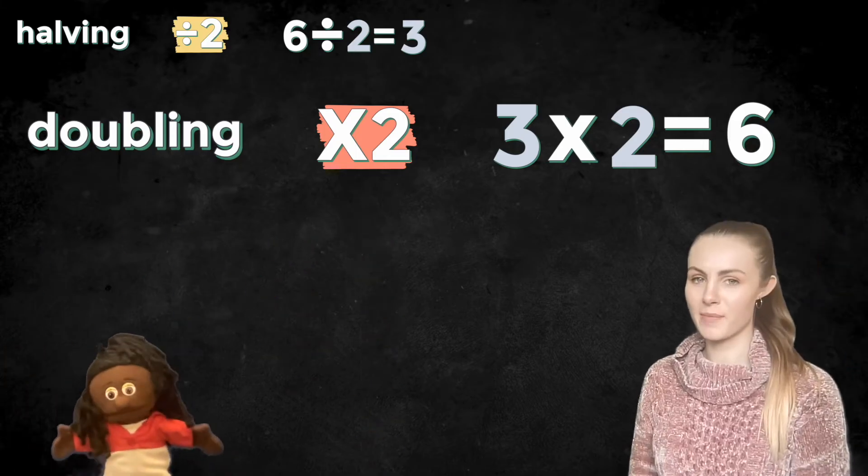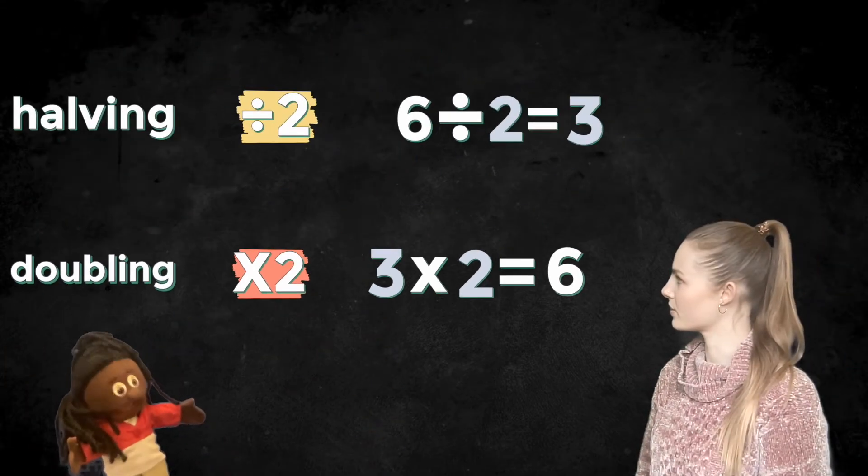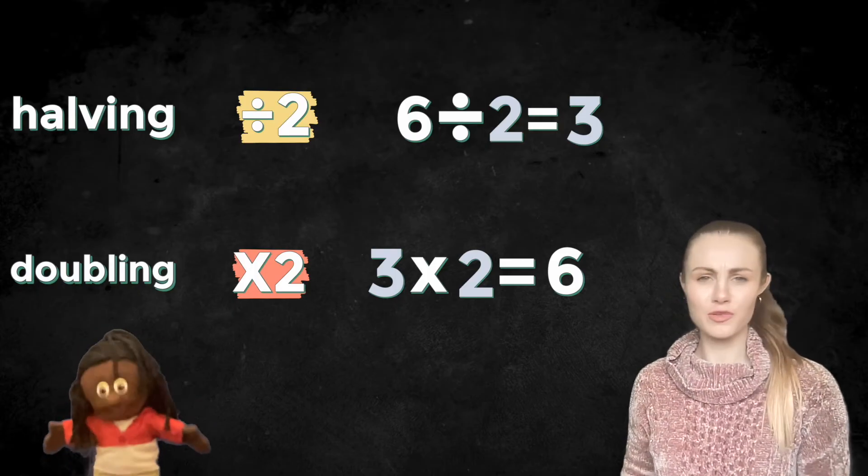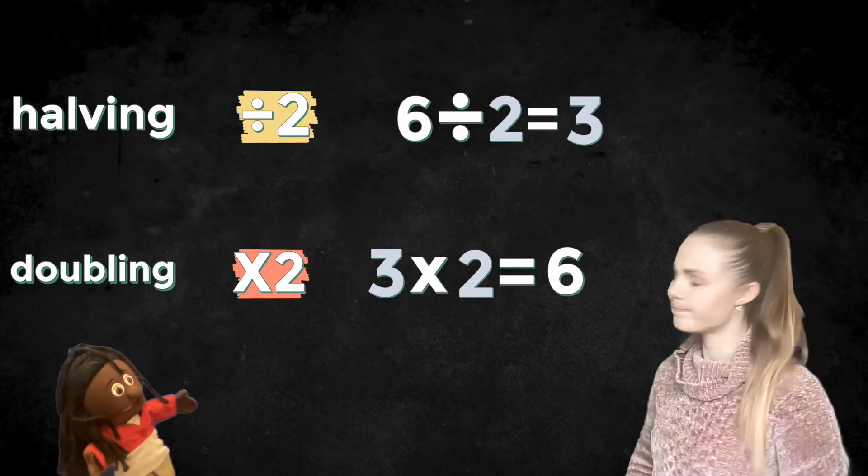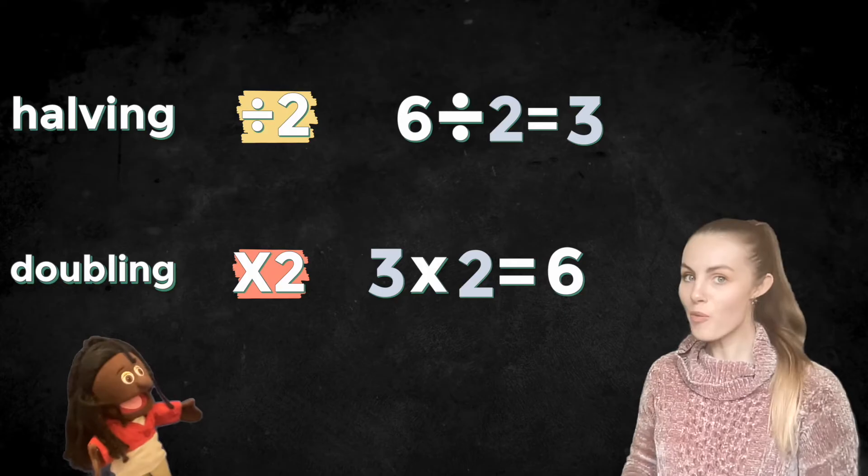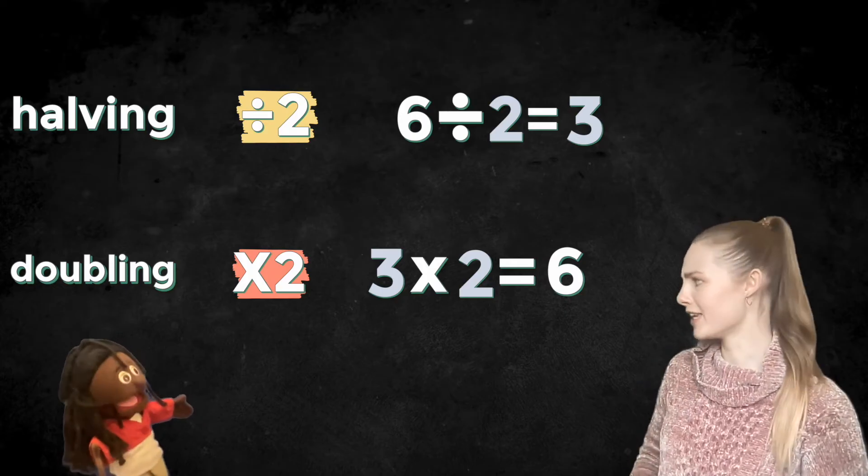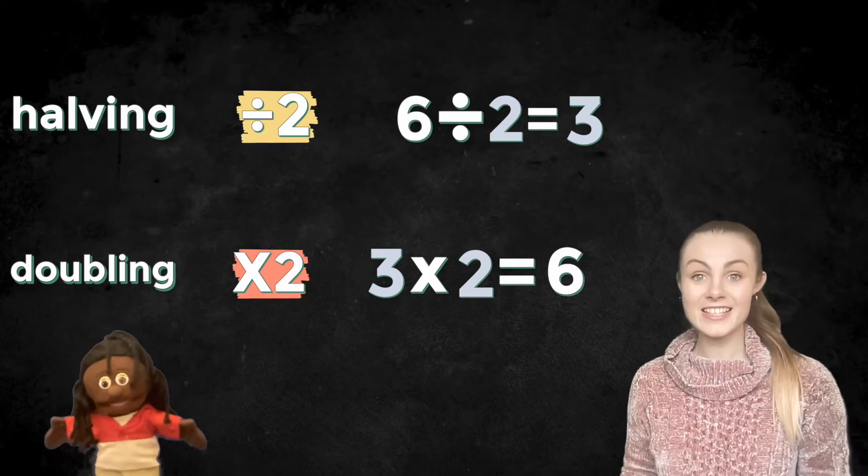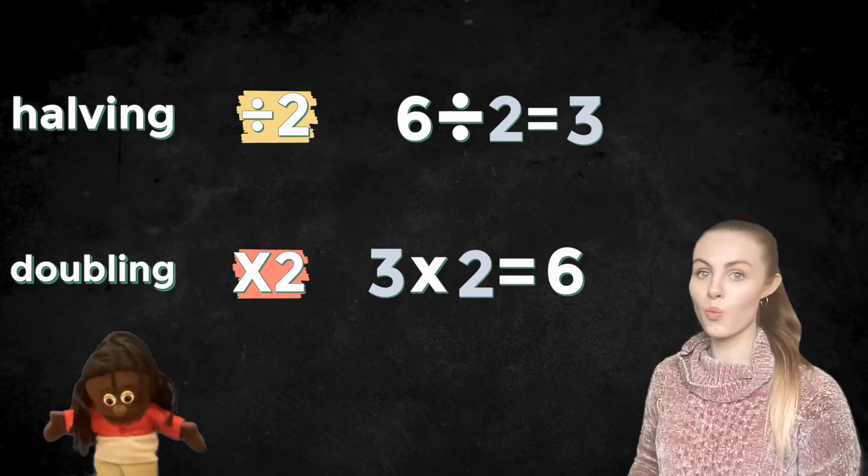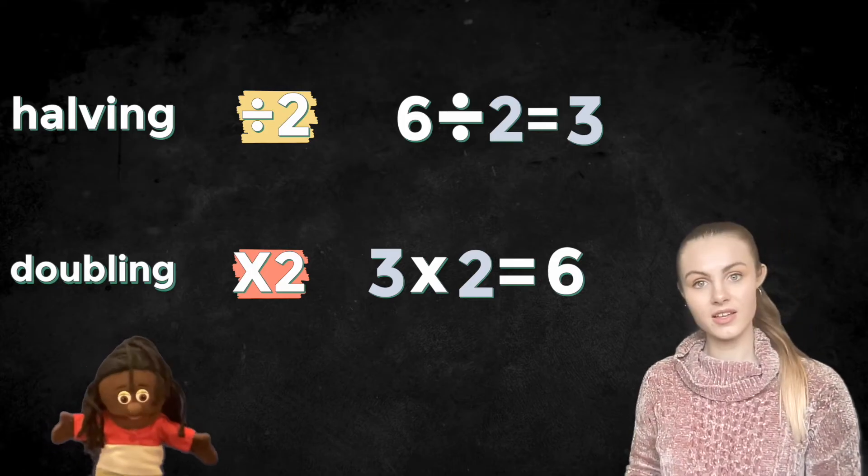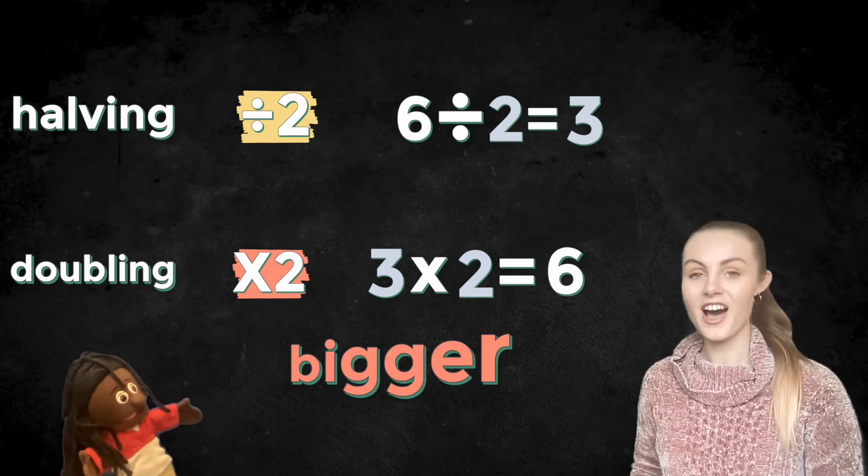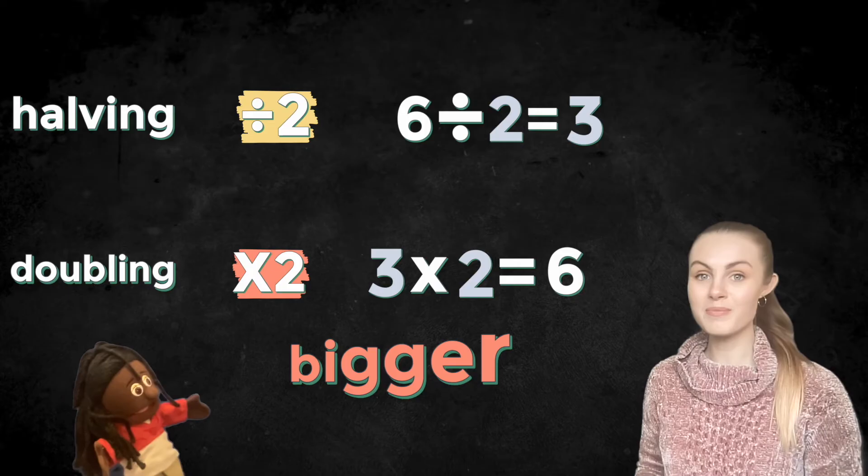Do you notice anything about these number sentences, Roo? You're right. They've got the same numbers. They're just in different places. That's because doubling and halving have a very special relationship. They're opposites. Yes, Roo, a little bit like you and Pig. It's a little bit like tying your shoelaces and untying your shoelaces. One undoes the other. Doubling makes the number two times bigger and halving makes the number two times smaller.